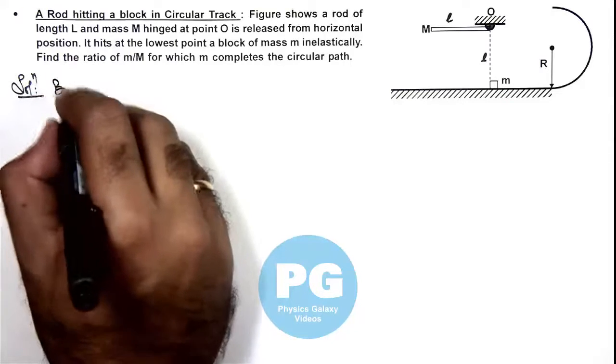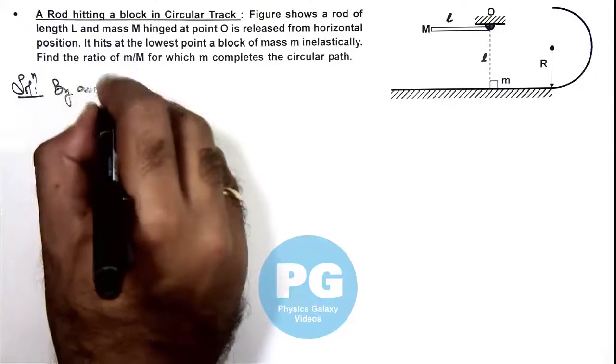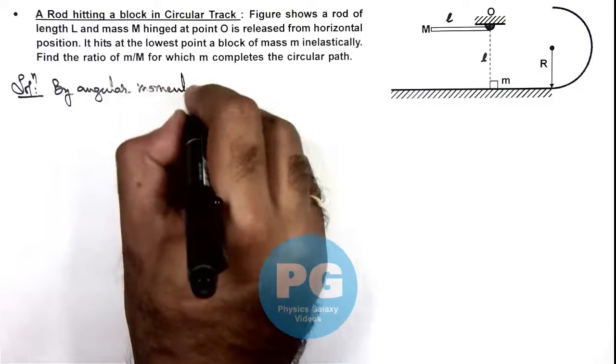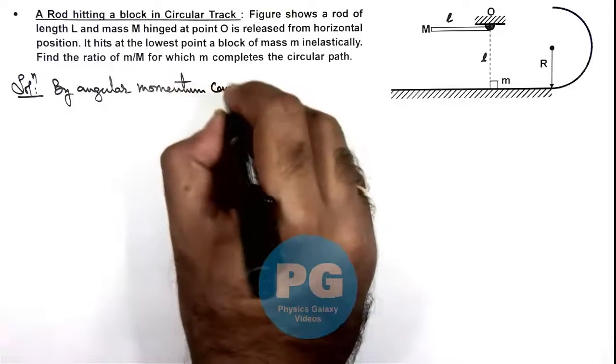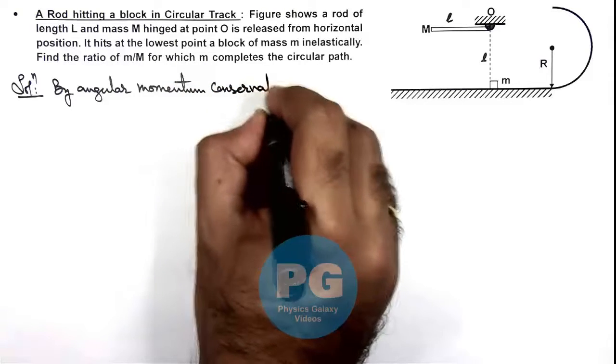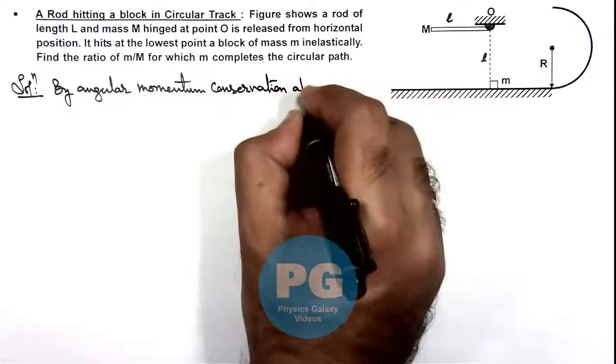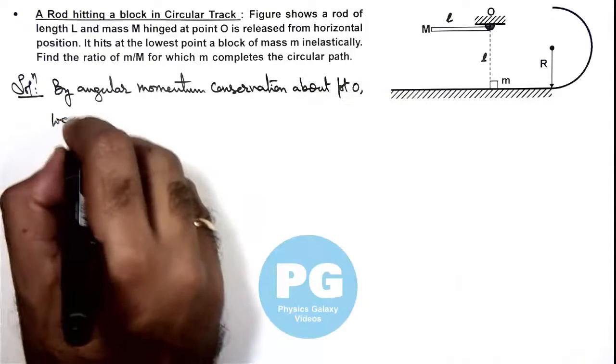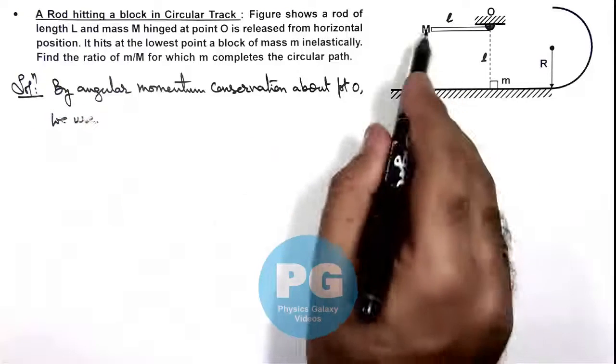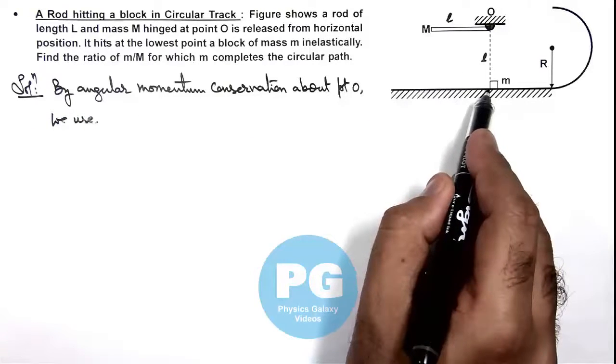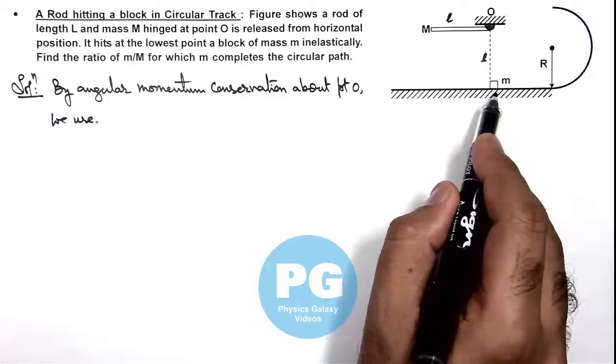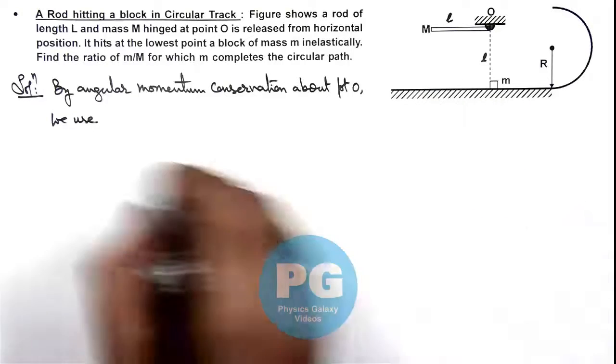By angular momentum conservation about point O, we use when the rod strikes the bottommost point with m, say it hits it at an angular speed omega, then we can write.